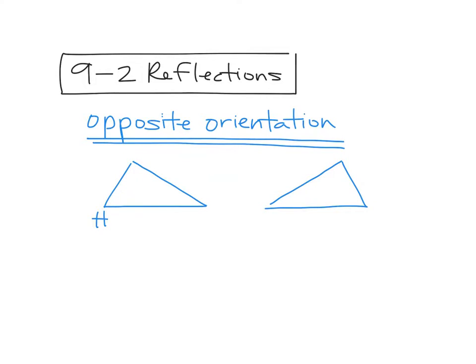So basically what happens with an opposite orientation is if you have something like this. If this is HOG and this is H prime O prime G prime. Yesterday when we were doing slides, if you named the things, they got named in the same direction. I was going clockwise every time I named it, or counterclockwise every time I named the two figures. With an opposite orientation, you're moving in the opposite direction. So if I name this triangle HOG, I'm moving around like this. Triangle HOG. I named it in a clockwise motion.